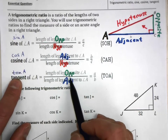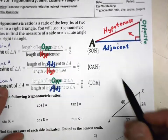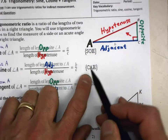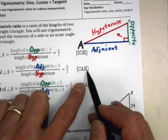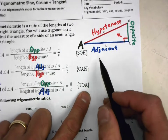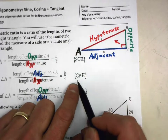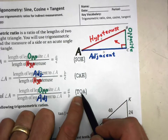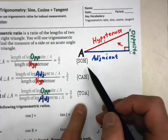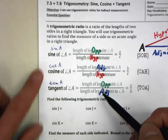You can remember that by SOH-CAH-TOA: sine equals opposite over hypotenuse, cosine equals adjacent over hypotenuse, tangent equals opposite over adjacent. Or you could say 'some old hippie caught another hippie tripping on acid.' Also remember that the FSA reference sheet has these trigonometric ratios on it.